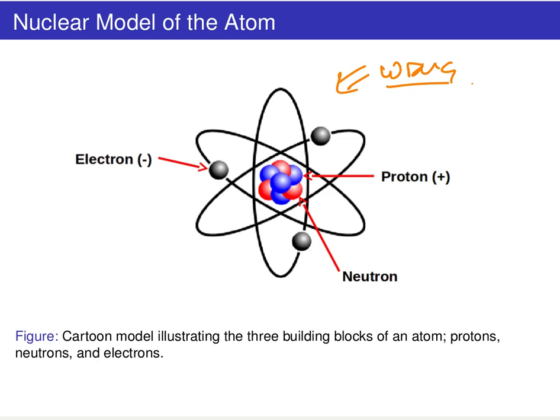We'll find later in chapter six that this orbital model is actually wrong in many ways. We've got some things right — there's a nuclear region and electrons around the nucleus — but this idea that they're just circling around needs more work.